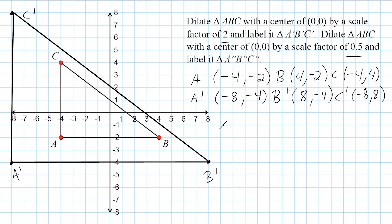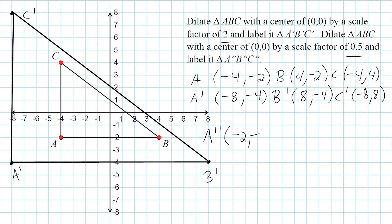Now we need to dilate our original triangle ABC by a scale factor of 0.5, or five-tenths. We should recognize that five-tenths is the same as one half, so we're taking our original coordinates and multiplying each by one half — which is the same as dividing by two. The new location of A double prime is going to be negative two, negative one, because half of negative four is negative two and half of negative two is negative one.